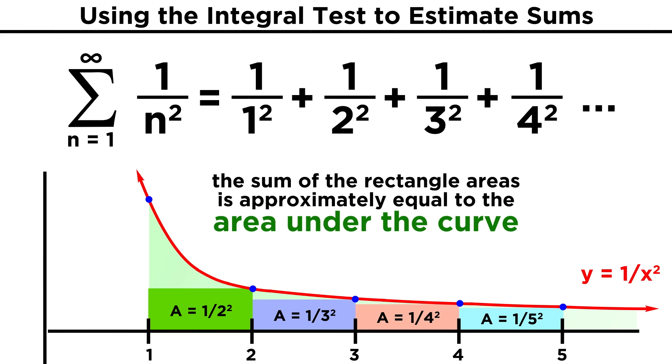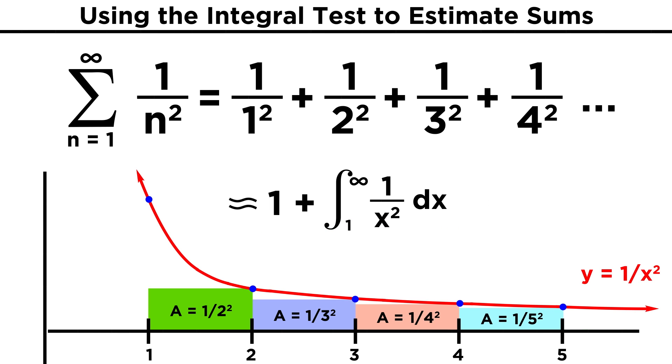The sum of the areas of these rectangles is pretty close to being the area under the curve, which we know is just the integral of the function. So the sum of the series will be approximately equal to one, to account for the first term in the series that has no corresponding rectangle, plus this improper integral, which approximates the sum of all the rectangle areas, and therefore accounts for the rest of the terms in the series.